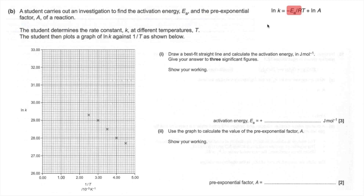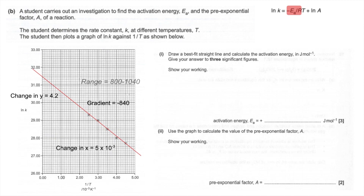We draw a best-fit straight line — there'll be some variation in answers. To calculate the gradient we need the change in y and change in x. My change in y is 4.2 and my change in x is 5×10⁻³, giving a gradient of −840 (negative because it slopes down). The accepted range for the gradient is between −800 and −1040.